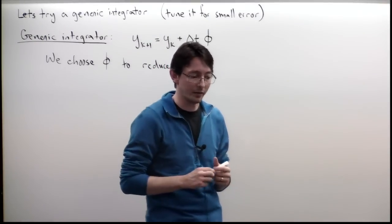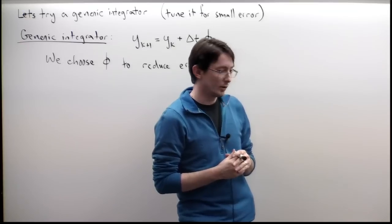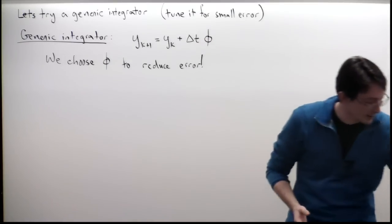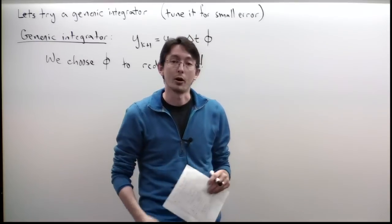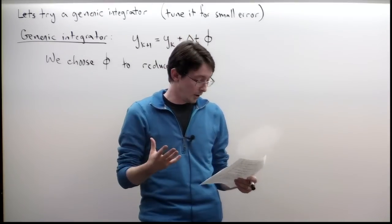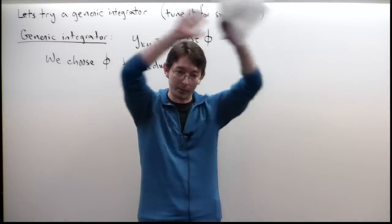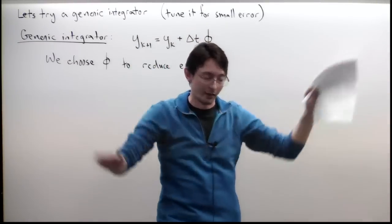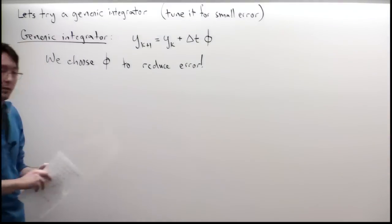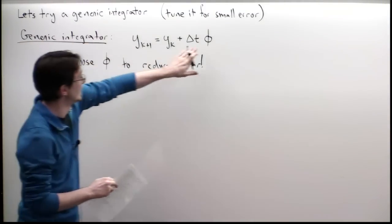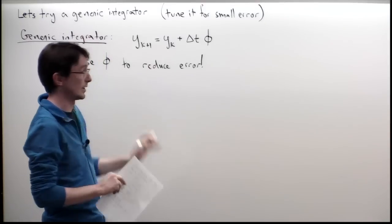I'm also aware that it's possible to watch these lectures at one-and-a-half speed. If there's anything really important where I want us to take a big step back, I'll try to remember to wave my hands. So, we're going to try to create a generic integrator by shaping some function phi that gives us reduced error.